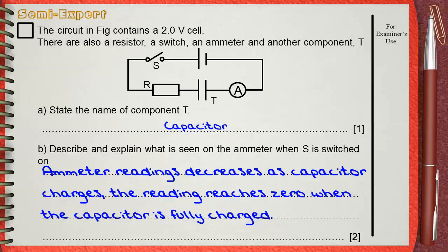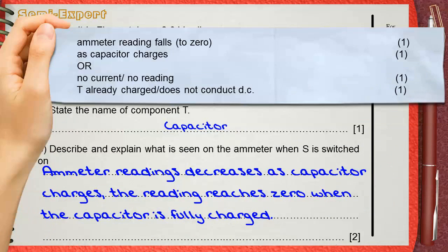Let's see what's in the mark scheme. He gave two possible answers, each one for two marks. Let's discuss the first one. Ammeter reading falls to zero. This is one mark. As capacitor charges. This is the second mark.